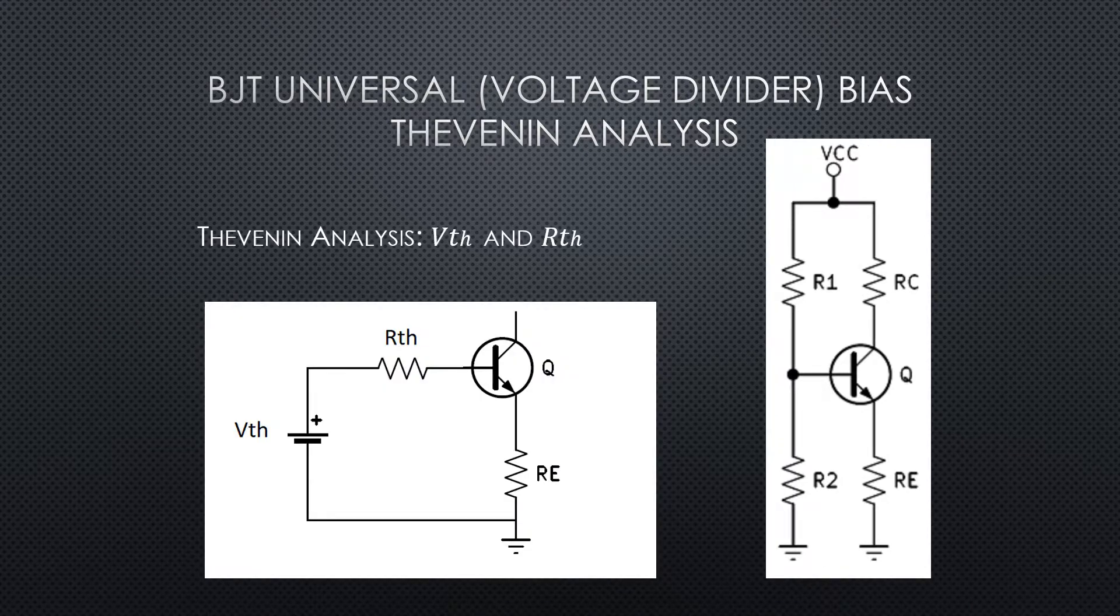So here is our Thevenin circuit representation of our universal bias configuration circuit. And you can see that the load, what would have been RL in the previous videos, is now our circuit from base through the whole emitter.